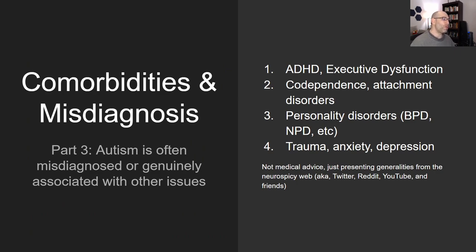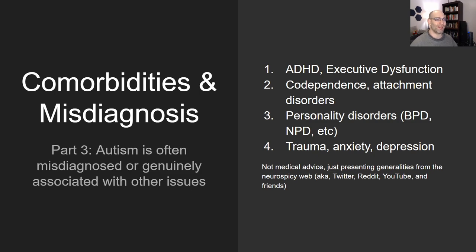Part three: comorbidities and misdiagnoses. There are a lot of things that autism is often mistaken as, and also some legitimate comorbidities. I have to put a huge asterisk on this list — I cannot give you medical diagnosis or medical advice. All I'm doing is presenting generalities from the web: observations from Twitter, Reddit, YouTube, and my friends. Take all of this with a grain of salt; these are just my personal opinions, not medical advice.